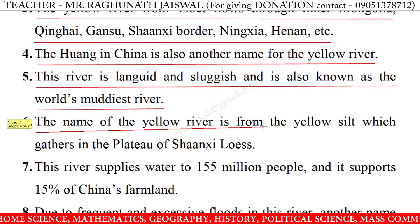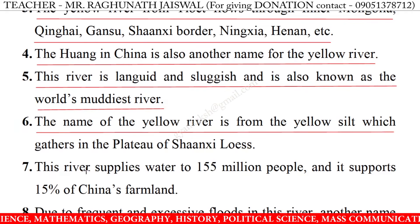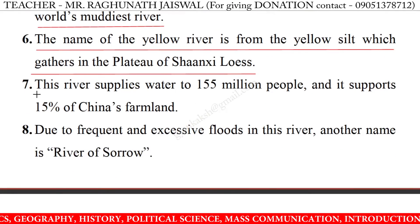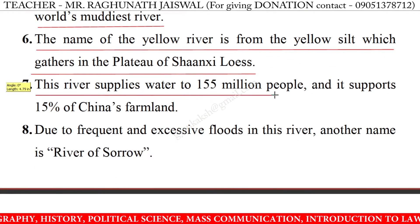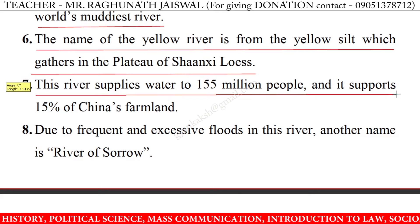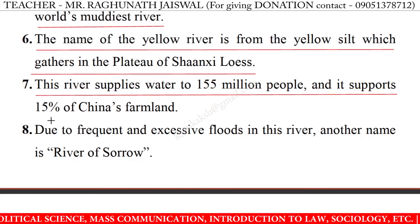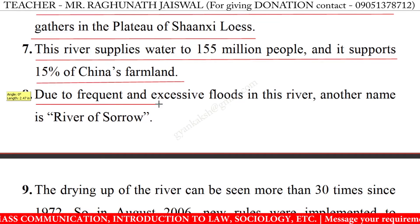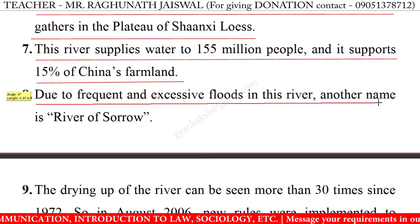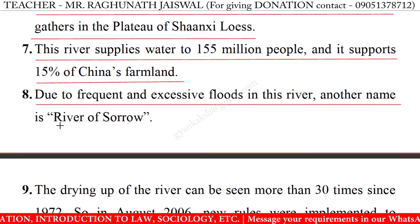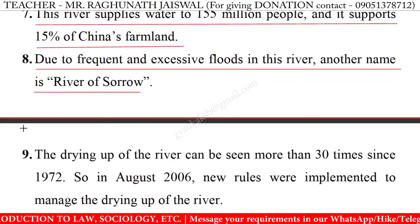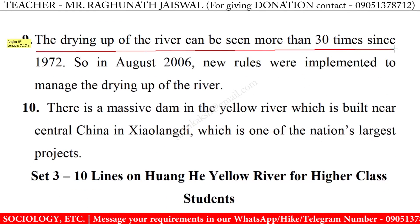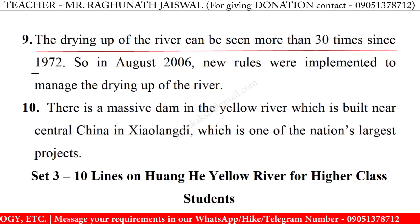6. The name of the Yellow River comes from the yellow silt which gathers in the plateau of Shanxi Loess. 7. This river supplies water to 155 million people and supports 15 percent of China's farmland. 8. Due to frequent and excessive floods in this river, another name is River of Sorrow. 9. The drying up of the river can be seen more than 30 times since 1972.